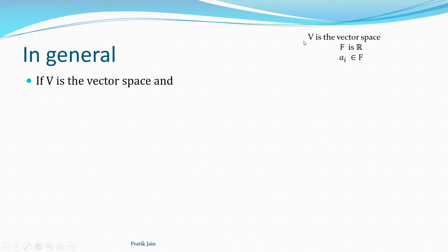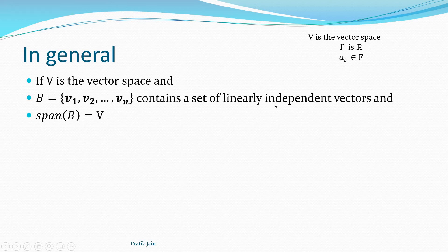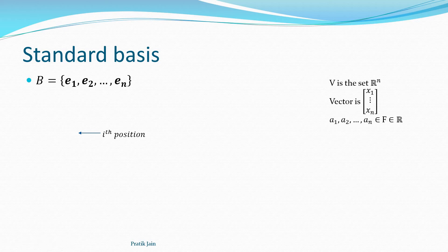You need two vectors in the basis set if this is R². B can also be known as the basis set. In general, if V is a vector space and B is a set of vectors, they should be linearly independent vectors — v1, v2, through vn should all be linearly independent. Additionally, the span of B should equal V. There are two conditions: linearly independent vectors and span of B equal to V — only then B is the basis for V.